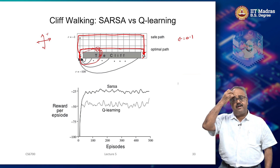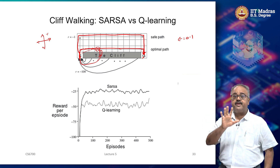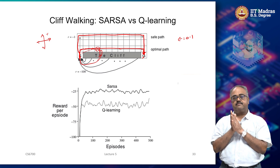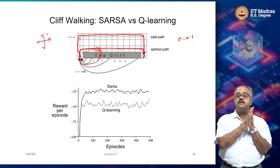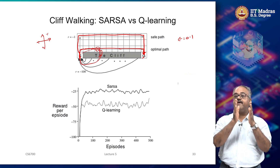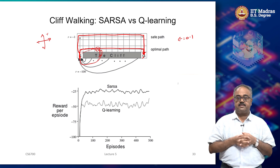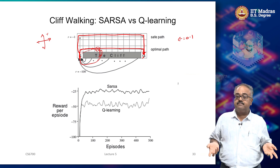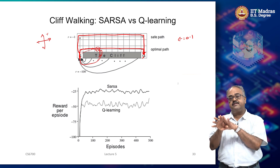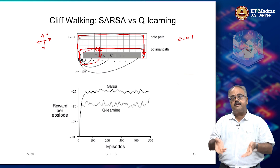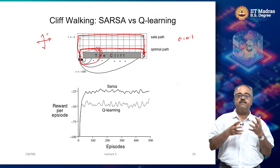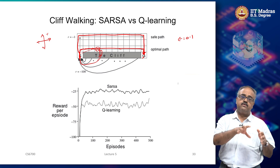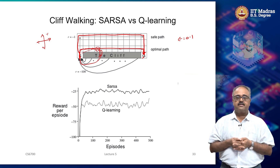One way to think about it: Q-learning learns the optimal policy assuming that when finally using the policy you will behave greedily with respect to the Q function. On the other hand, SARSA assumes you are going to continue exploring — that the epsilon-greedy policy is how you will actually behave in the future. So it incorporates the loss due to epsilon-greedy behavior into the value function and learns a policy best with respect to the epsilon-greedy execution.